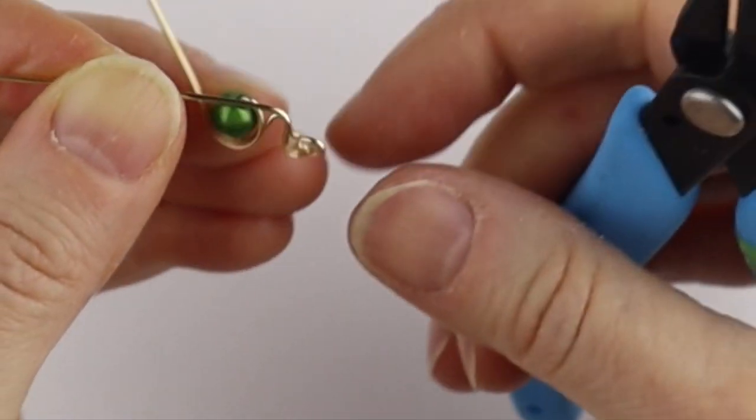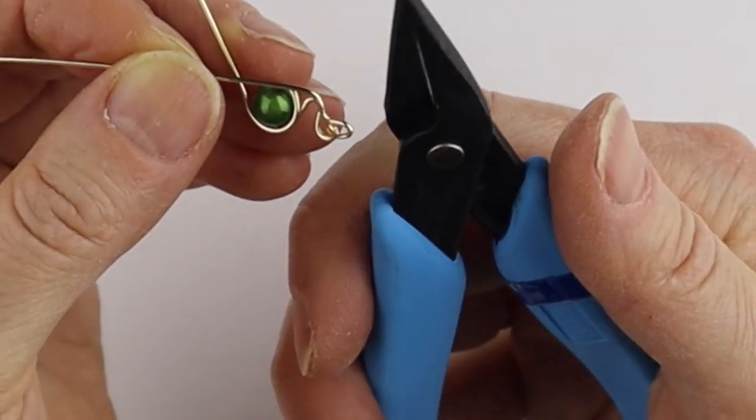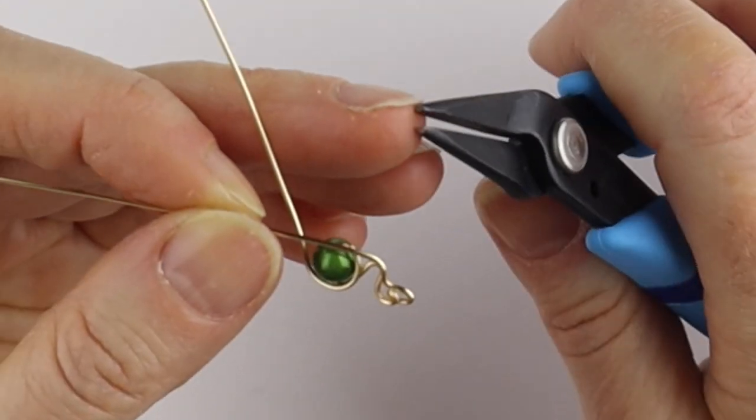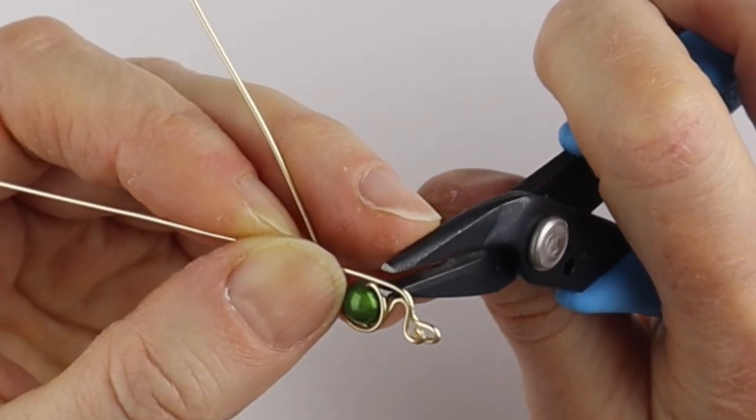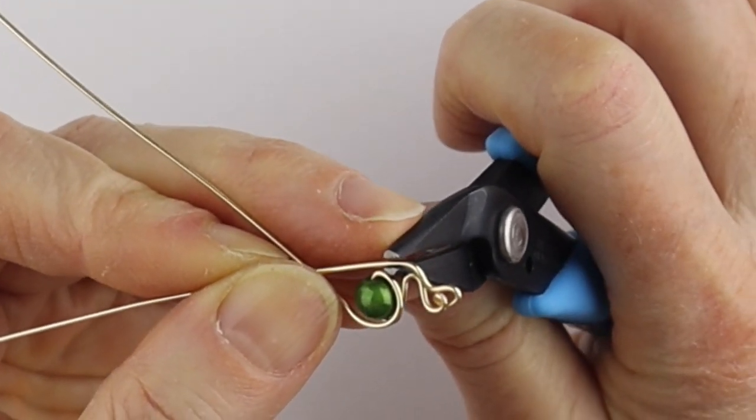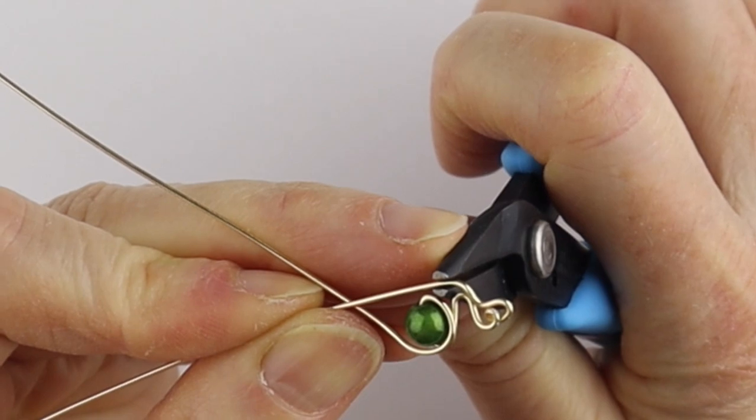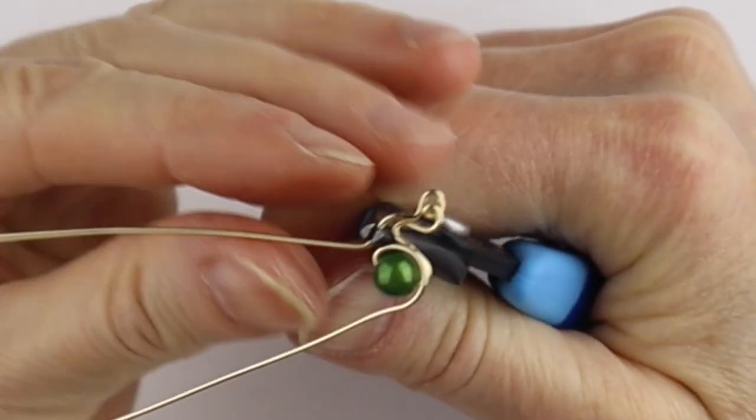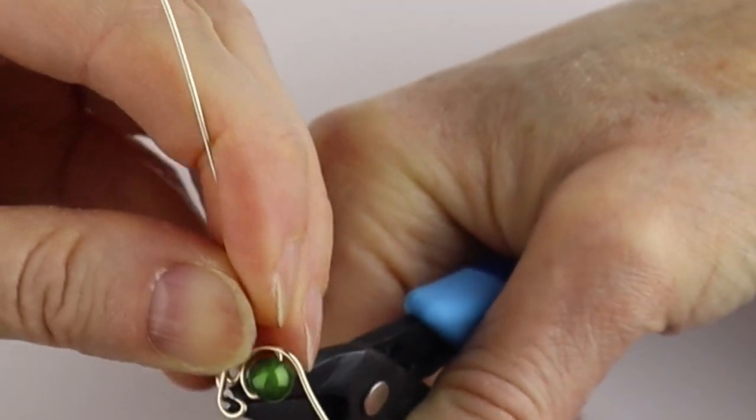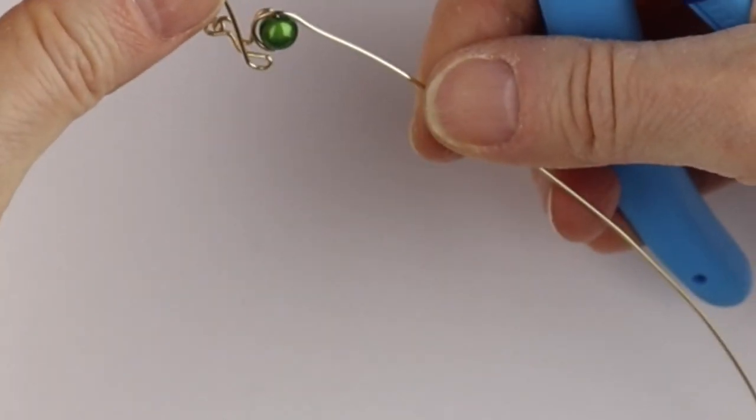I'm going to use the chain nose pliers that are a little bit round on one side and flat in the middle. Just hold this in place and we want to form one of the feet, so just bring it around and that makes one of the little feet.